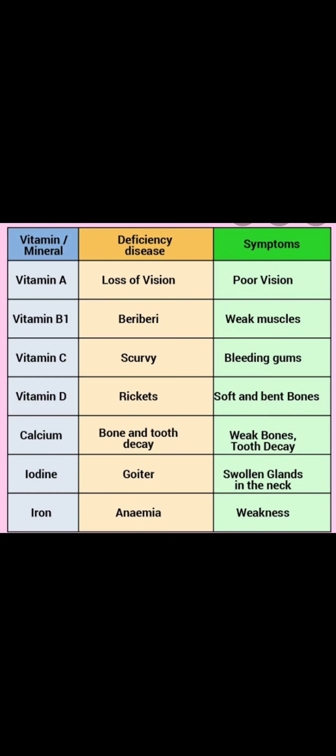Let us recap the vitamin and mineral deficiency diseases. Vitamin A deficiency causes night blindness, with symptoms of poor vision. Vitamin B1 deficiency causes beriberi with extreme weakness. Vitamin C deficiency causes scurvy, characterized by bleeding gums. Vitamin D deficiency leads to rickets, characterized by soft and weak bones. For minerals: calcium deficiency causes osteoporosis, meaning weak bones and tooth decay. Iodine deficiency leads to goiter, characterized by a swollen gland in the neck.